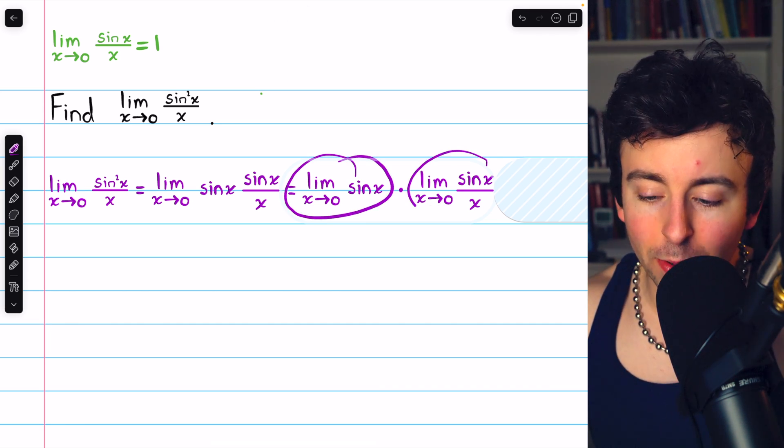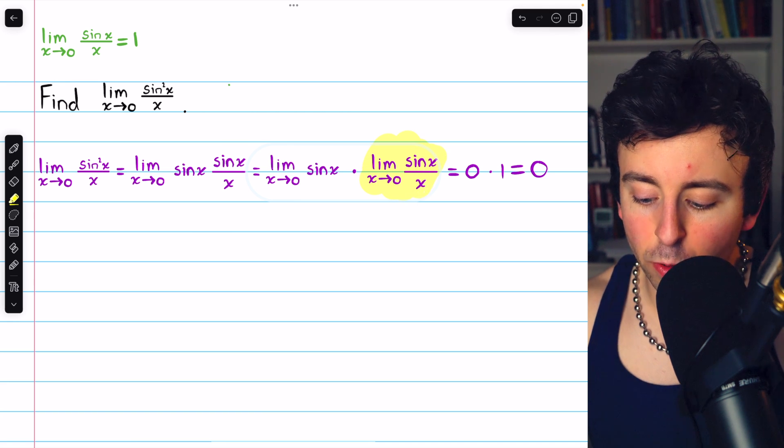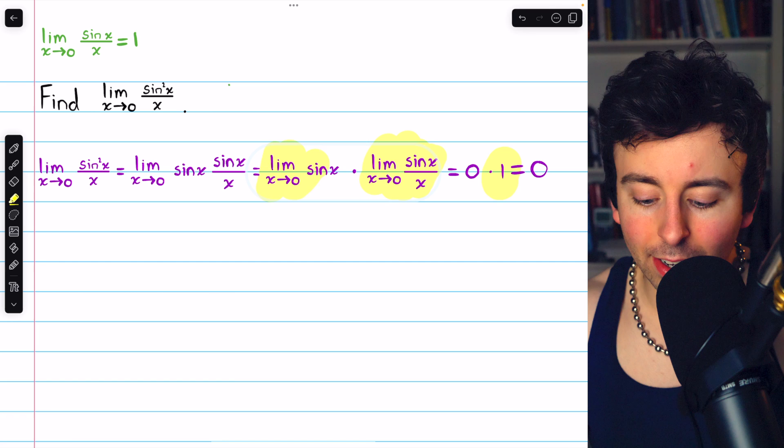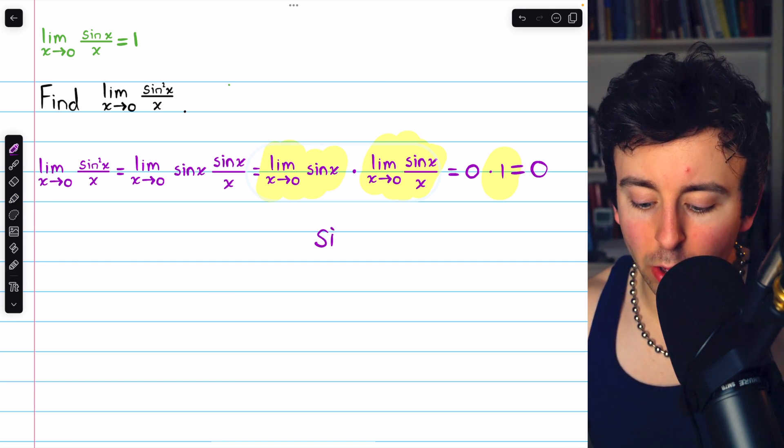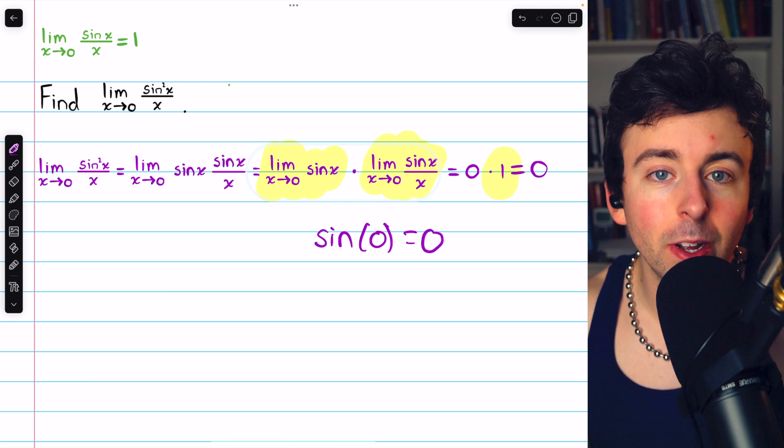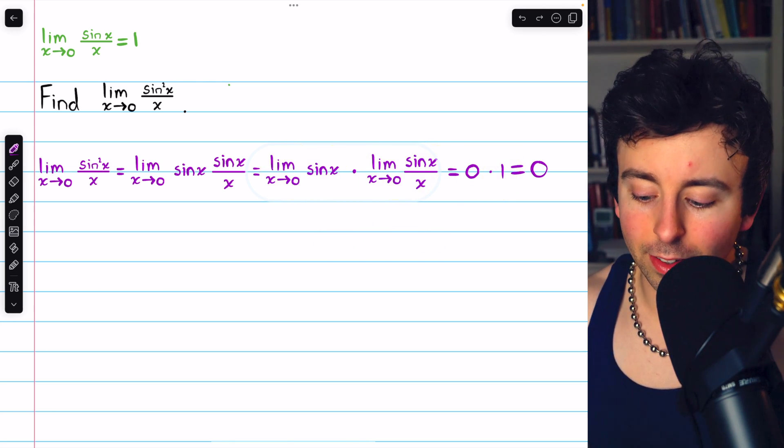We know this limit, and we know this limit. We're done. The limit of sine x over x as x approaches 0, famously, is 1. And the limit of sine x as x approaches 0, we can evaluate by just plugging 0 in, which of course gives us 0. So 0 times 1 is our answer, and so our answer is 0.